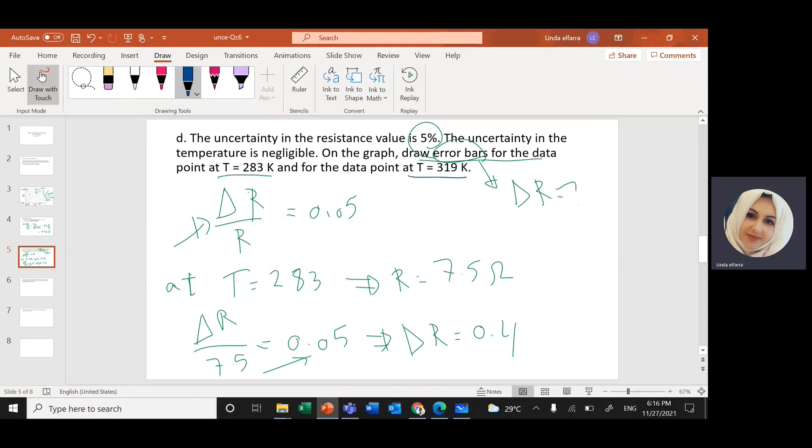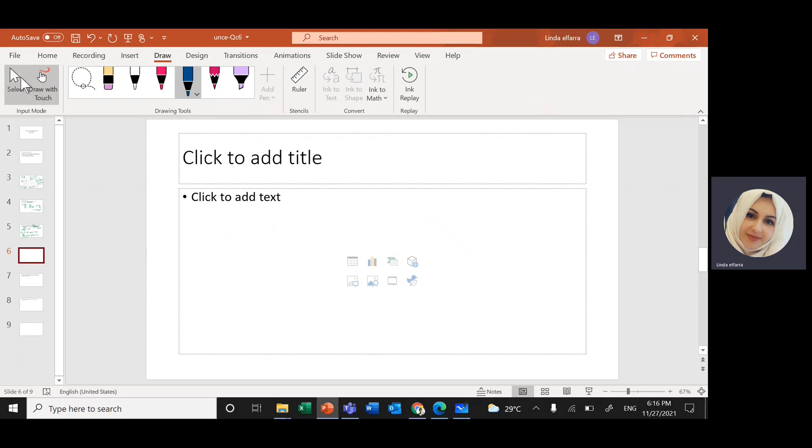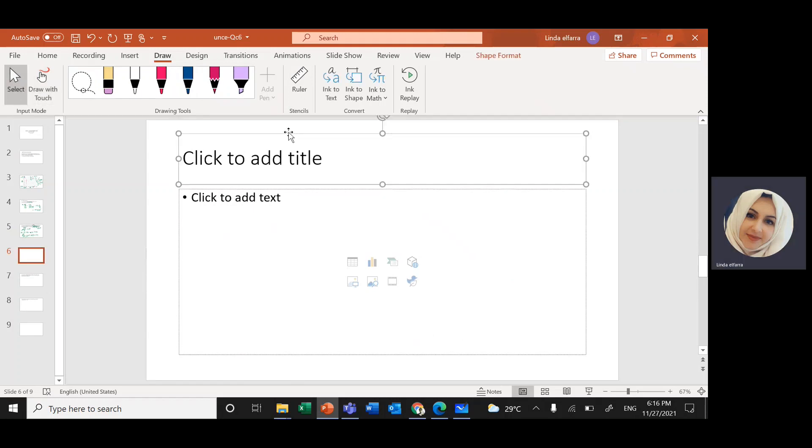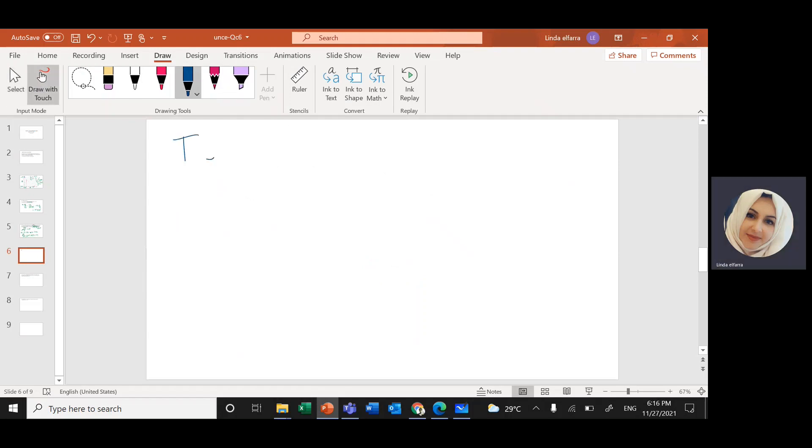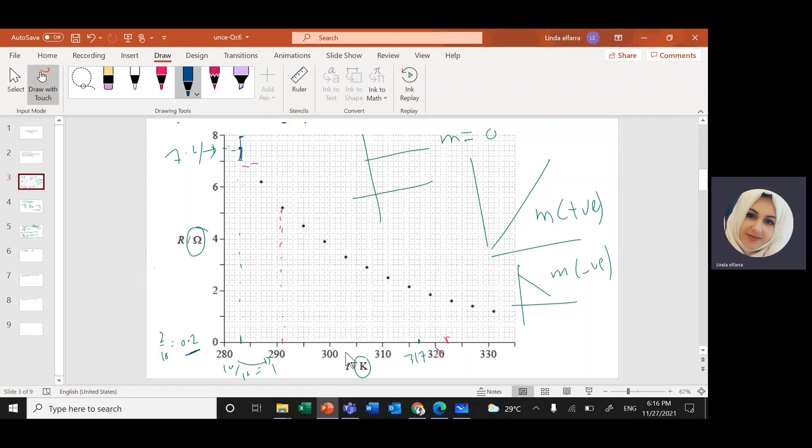So same thing we can calculate for the other value, which is T equals 319. T equals 319 Kelvin. R from the curve, from the graph. We'll go and read 319. So here 15, here 17. So it will be around here. Go and read this value.